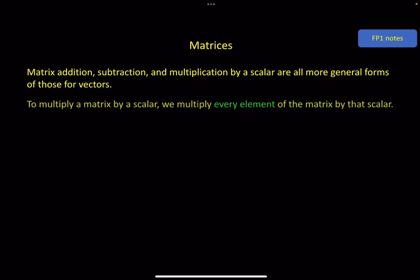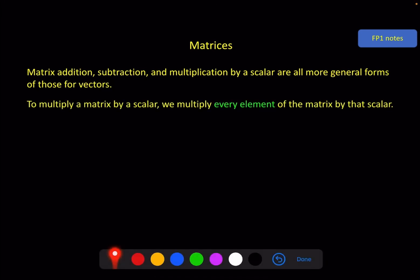For multiplication by a scalar, you just multiply every element of the matrix by that scalar, as we did with vectors. So here we've got 3 times this matrix, so we do 3 times each of the elements, and we get this.